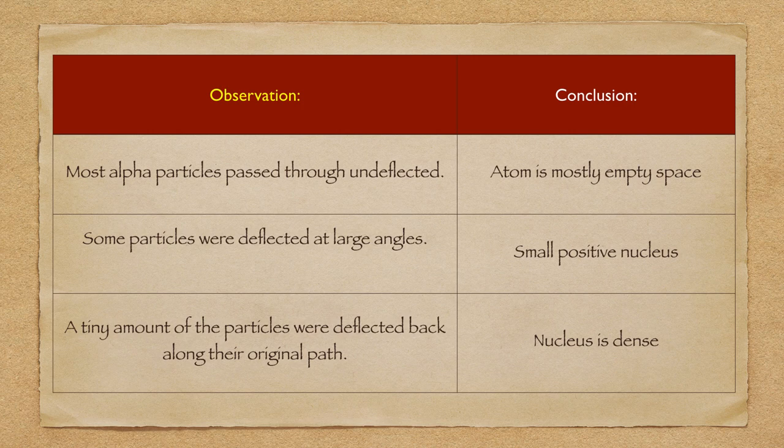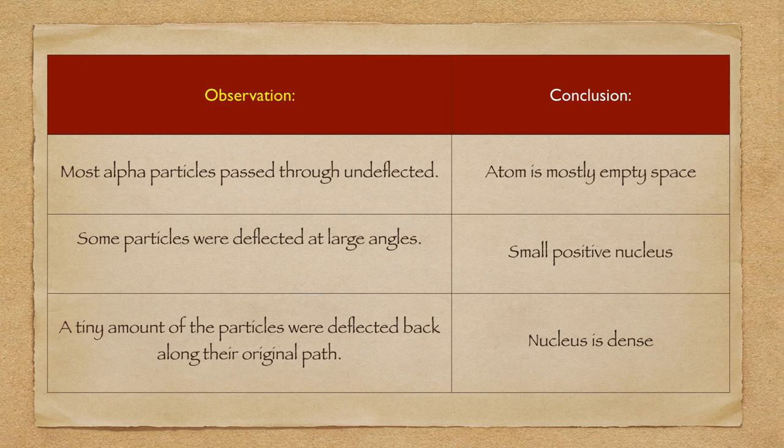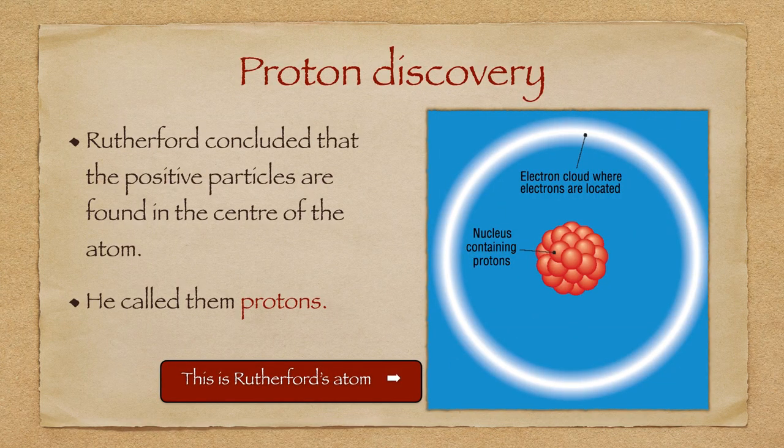You are expected to know three observations and Rutherford's three conclusions from these observations. Rutherford stated that the positive particles in the centre of the atom are called protons. Rutherford's experiments meant that Thomson's plum pudding model was incorrect, as no reflection of alpha particles should have occurred under his model.